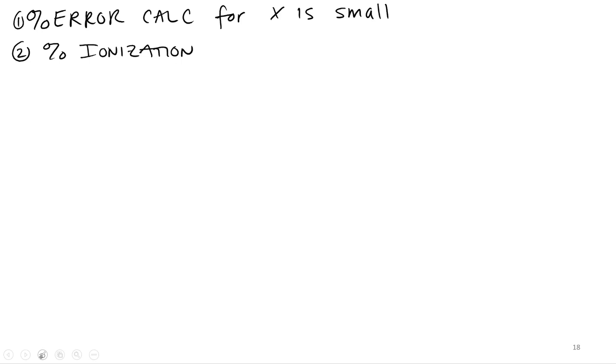So all you do for both of these is you take your x, so we're calculating the percent. You take your x and put it over your initial concentration. And then it's of course percentage, so you multiply by 100%.